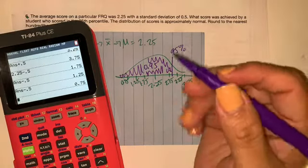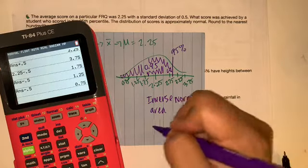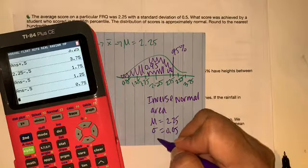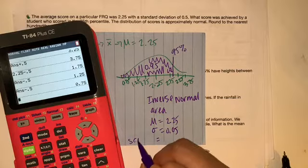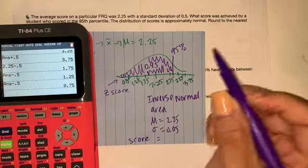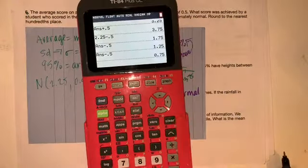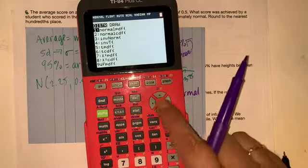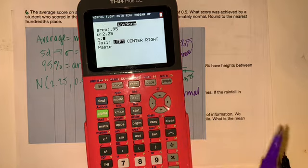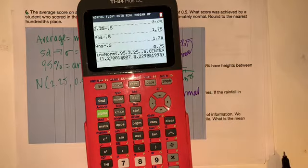In the calculator it's going to be inverse normal. The area is the percentile, mu equals 2.25, standard deviation equals 0.5. This is going to give us the score — remember this is the z-score, and everything under the curve is the area. I'll do it on both calculators. On the TI-84: second, vars, inverse normal. Area is 0.95, average is 2.25, standard deviation is 0.5. For the tail, always do the default tail on the left. Go down to paste and enter.